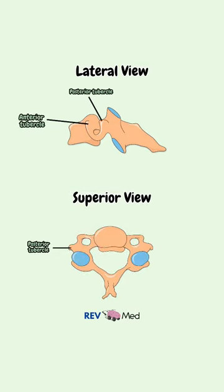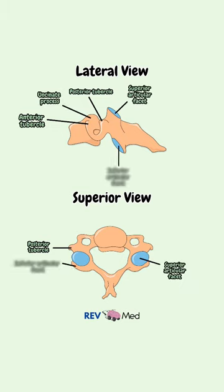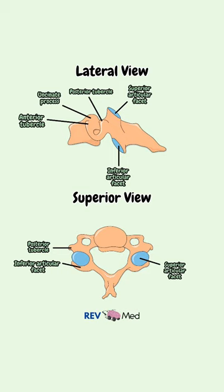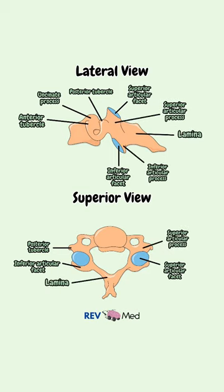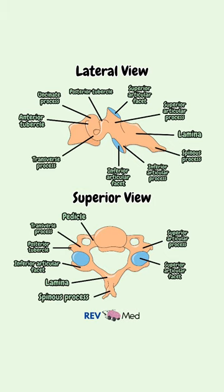We have the anterior and posterior tubercle, the uncinate process, the superior and inferior articular facets, the superior articular process, the lamina and the pedicle, and the spinous process and the transverse process.